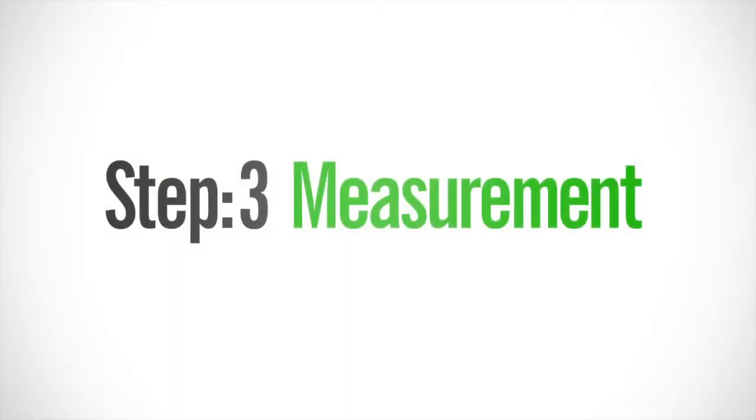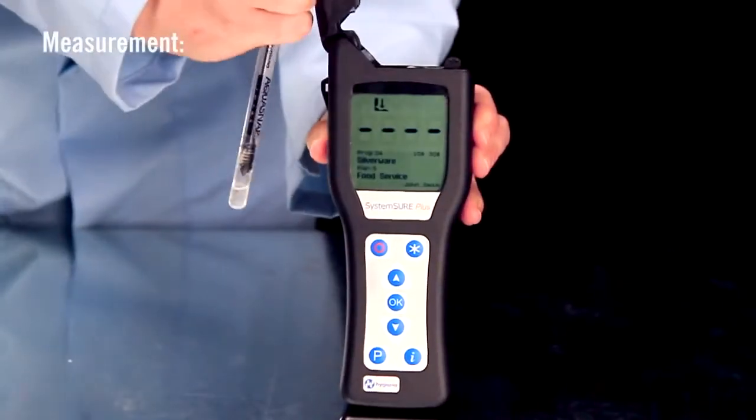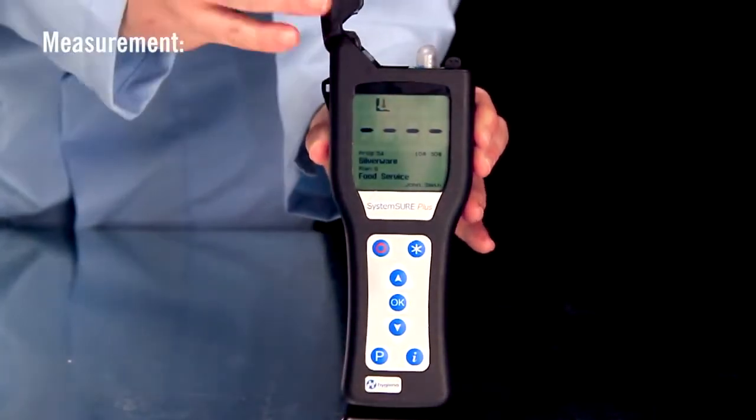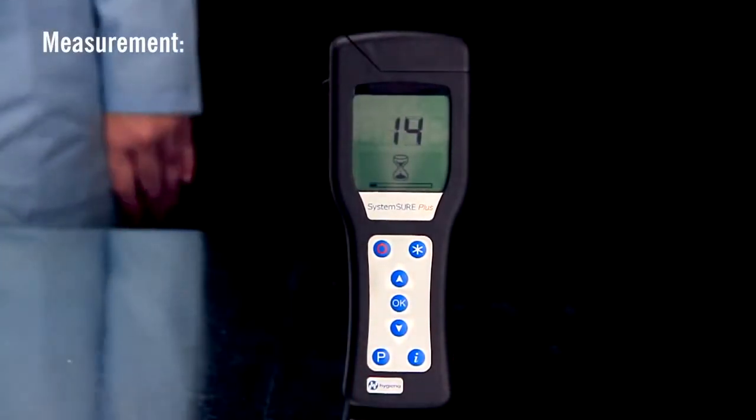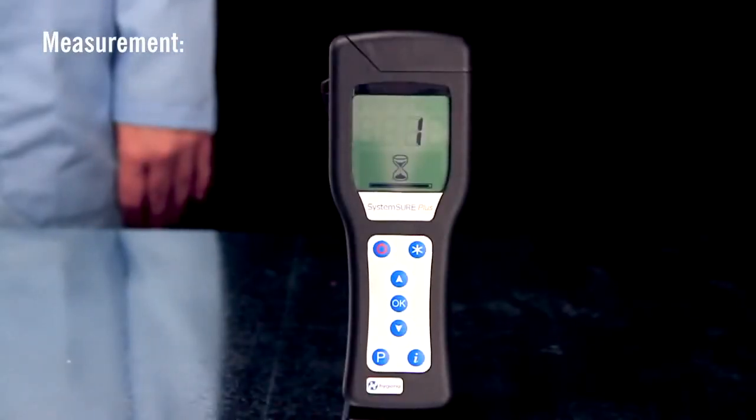The final step is measurement. Insert the test into the read chamber and close the lid. Holding the luminometer upright, press OK to initiate measurement. Results will be displayed in 15 seconds.